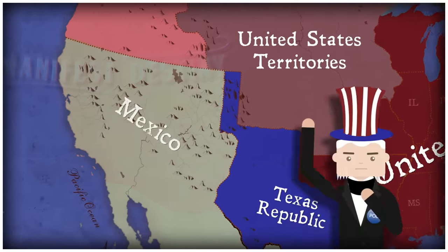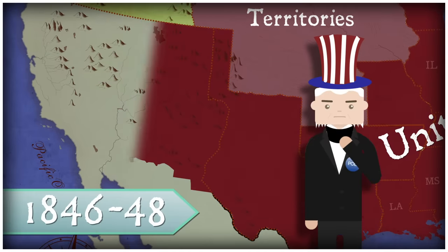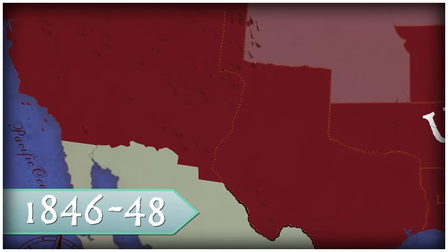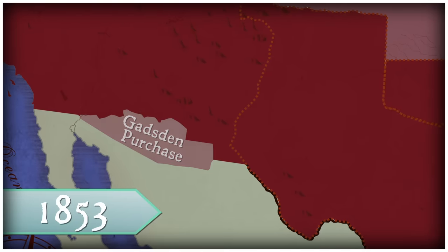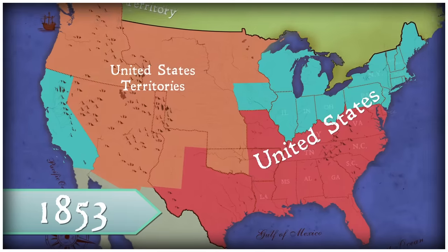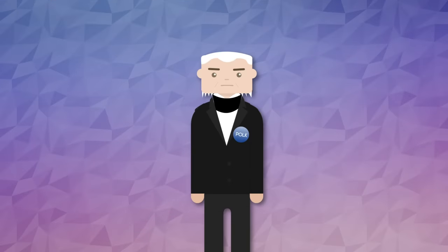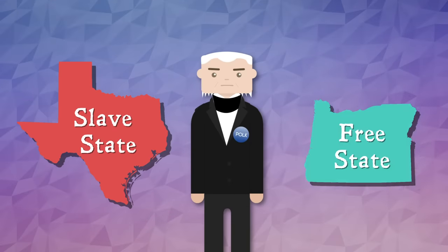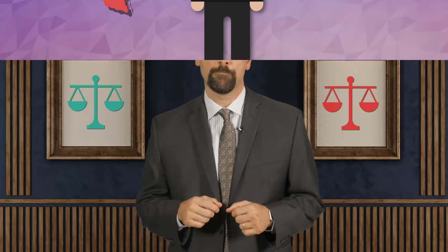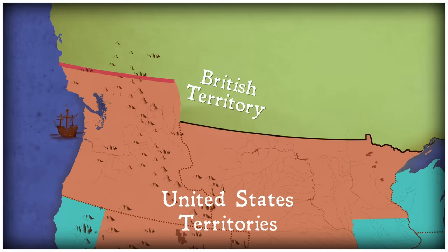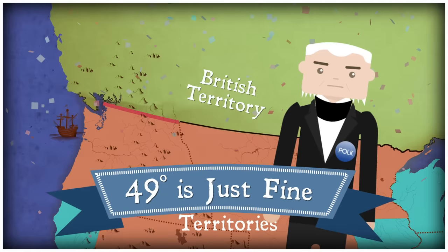After his election, Polk instigated a war with Mexico, which the United States won. That victory gave the United States all of California and New Mexico. And by 1853, the Gadsden Purchase completed the continental United States. By pairing Texas as a slave state and Oregon as a free state, President Polk managed to keep the slave state–free state balance. After he was elected, Polk softened on the 54°40' or fight mentality, and the U.S. and Great Britain compromised to split the territory at the 49th parallel without any fighting.